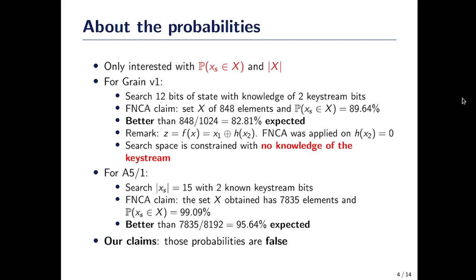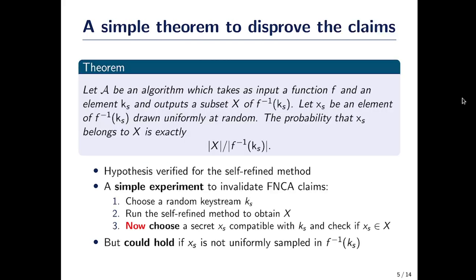Our claim is that those probability figures are wrong, basically because you cannot differentiate between a good and a bad internal state that would give you the same keystream. This is stated more formally with a simple information theory argument.